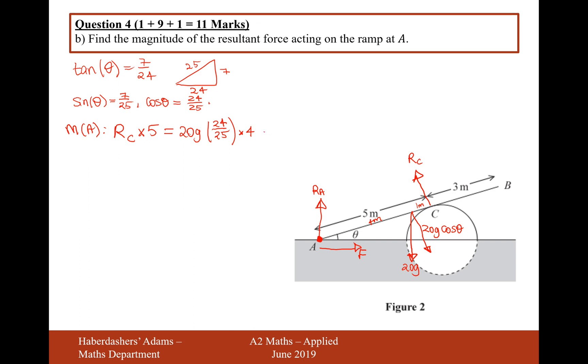Let's work out what RC is equal to. Therefore RC is going to equal this big calculation divided by 5, which gives us 384 divided by 25 times G. That's the value of the reaction force at C, but the question wants you to find the resultant force acting on the ramp at A, so that means the RA force and the F force and the resultant of those forces.